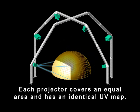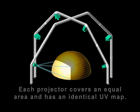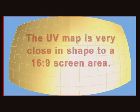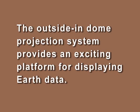Six projectors cover the dome with a seamless high-resolution image. Each projector covers an equal area and has an identical UV map, very close in shape to a 16-to-9 screen area. The outside-in dome projection system provides an exciting platform for displaying earth data.